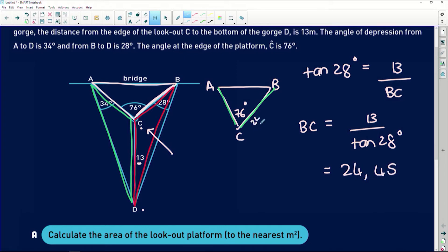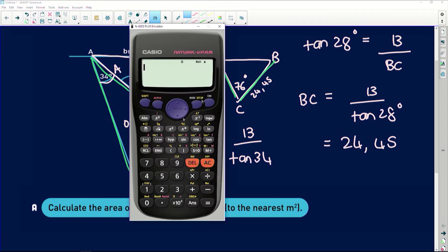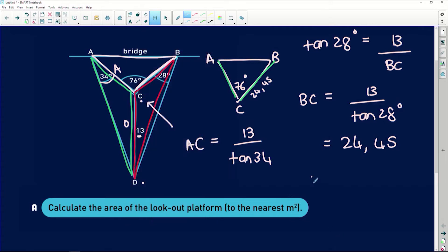Okay, so that's the side over here: 24.45. Same thing applies in the other triangle. AC would be equal to 13 over tan of 34 degrees because that's this angle over here. So if we put that in the calculator, 13 divided by tan of 34 gives us 19.27.